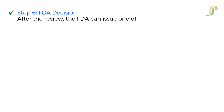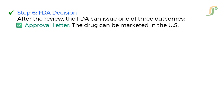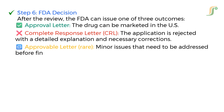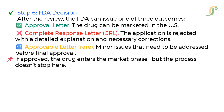Step 6: FDA Decision. After the review, the FDA can issue one of three outcomes: an Approval Letter (the drug can be marketed in the U.S.), a Complete Response Letter (the application is rejected with a detailed explanation and necessary corrections), or an Approvable Letter (minor issues that need to be addressed before final approval). If approved, the drug enters the market phase — but the process doesn't stop here.